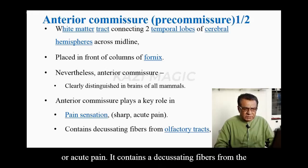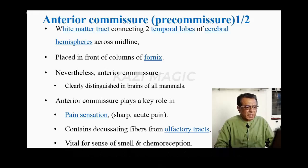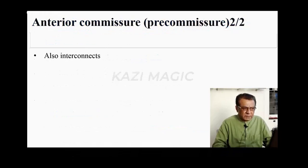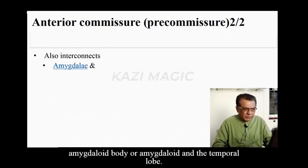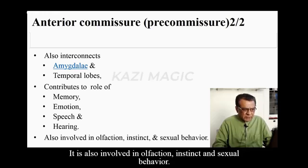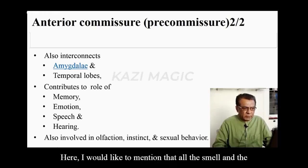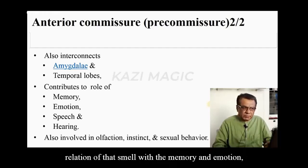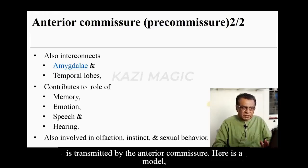It contains the decussating fibres from the olfactory tract and is vital for the sense of smell and chemoreception. It also interconnects the amygdaloid body, or amygdala, and the temporal lobe. It contributes to the role of memory, emotion, speech and hearing. It is also involved in olfaction, instinct and sexual behaviour. All the smell and the relation of that smell with memory and emotion is transmitted by the anterior commissure.